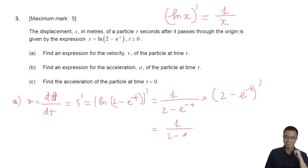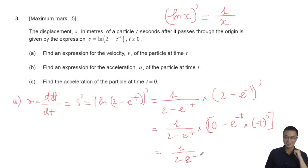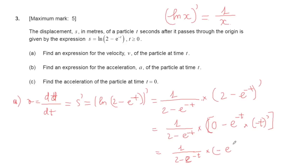Continuing the chain rule: we have minus e^(-t), then multiply by the derivative of minus t, which gives minus one. So we get minus times minus, which gives a plus. The final result for part a is: v = e^(-t) divided by (2 - e^(-t)).